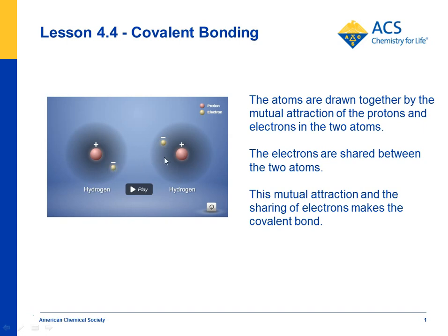And the other double-headed arrow indicates there's an attraction between the proton from this hydrogen atom and the electron from this one. So there's a mutual and even attraction between the positive and negative parts of both atoms.